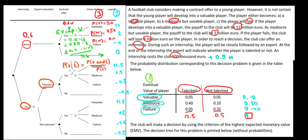What's the probability of being valuable and talented? We can have a look in the table — that's valuable and talented: 0.05. So that's going to be 0.05 divided by the probability of being talented, which is 0.5. If you work out the math, that's going to be 0.10.